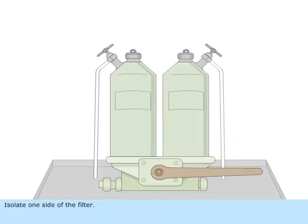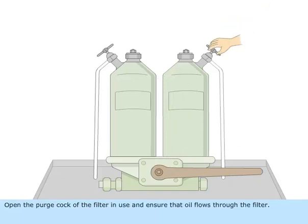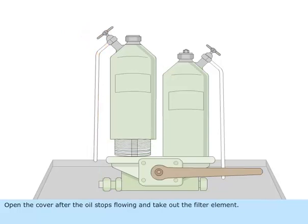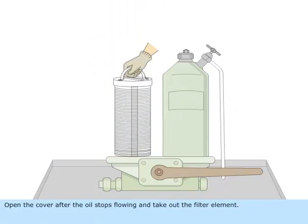Isolate one side of the filter. Open the purge cock of the filter in use and ensure that oil flows through the filter. Open the purge cock of the filter which is not in use. Open the cover after the oil stops flowing and take out the filter element.